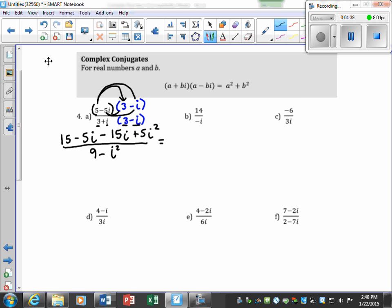Now we want to simplify the top and have like terms here. Negative 5i minus 15i would give me negative 20i, and I say plus 5, but instead of i squared, remember we said i squared equals negative 1. In place of this i squared, I'm going to go ahead and plug in a negative 1.